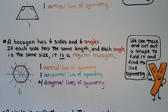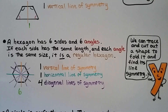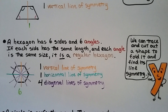A hexagon has six sides and six angles. If each side has the same length and each angle is the same size, it is a regular hexagon. It has one vertical line of symmetry, one horizontal line of symmetry, and four diagonal lines of symmetry. We can also trace and cut out a shape to fold it and find its line of symmetry.